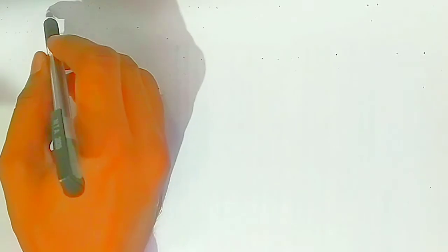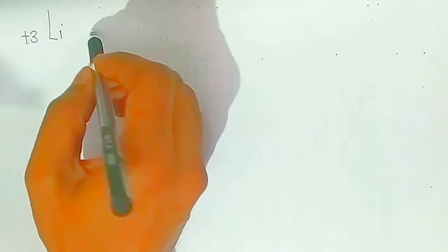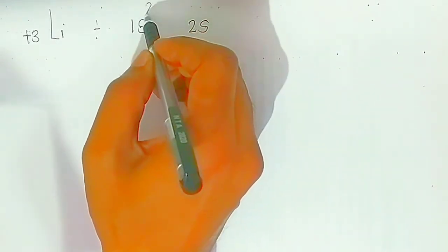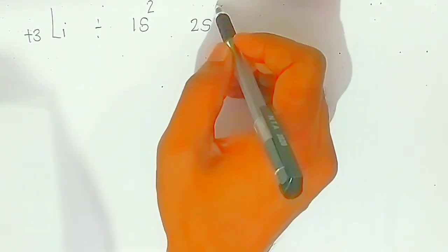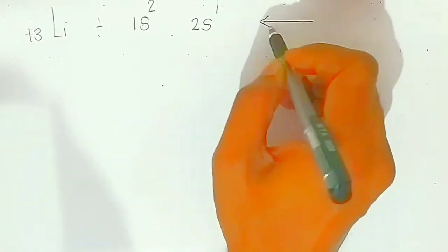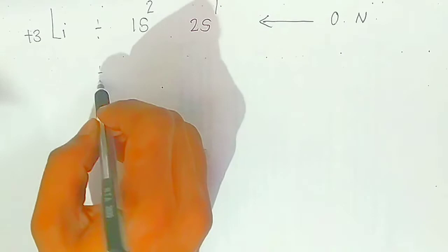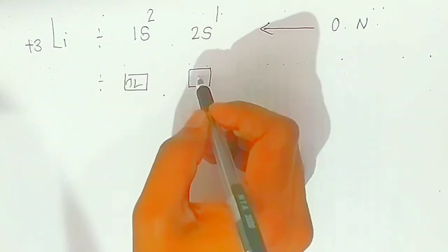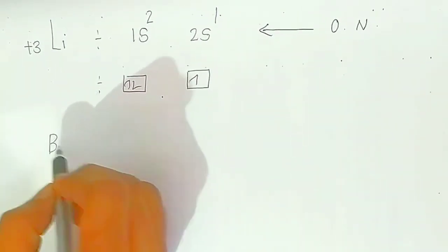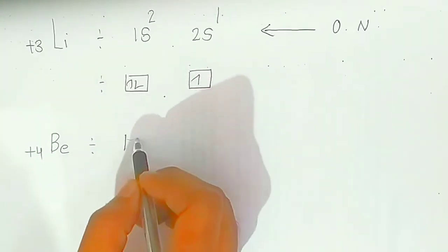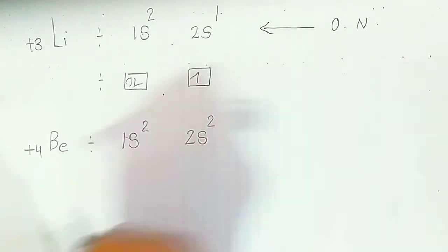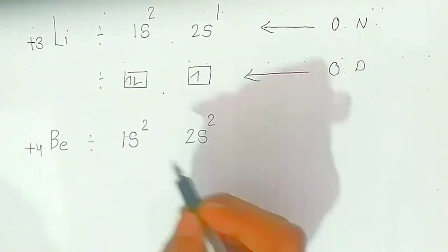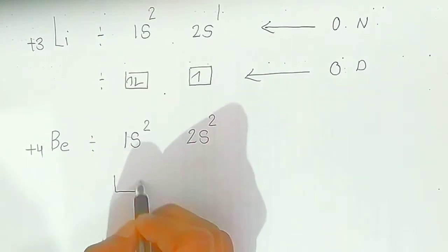Next is lithium, with atomic number plus three. The electrons distribute as 1s2 and 2s1 — the first two electrons go into the first orbit and the third electron goes into the 2s orbit. This is the orbital notation. For beryllium, atomic number is 4, the electronic configuration is 1s2 2s2. In the orbital diagram, each orbital can occupy a maximum of two electrons.